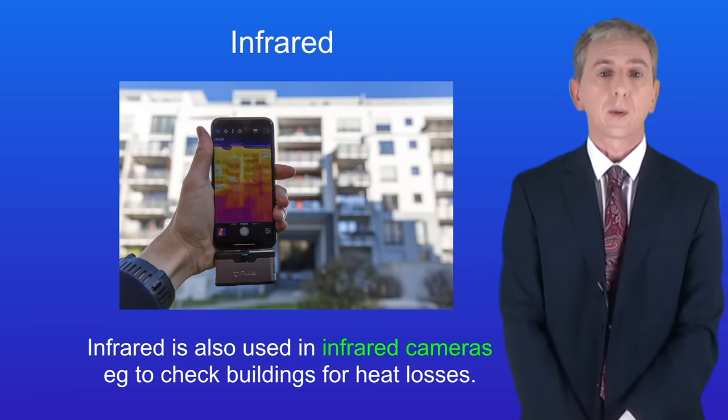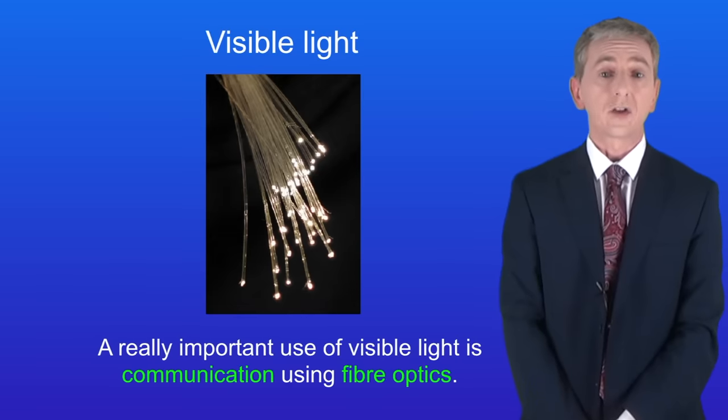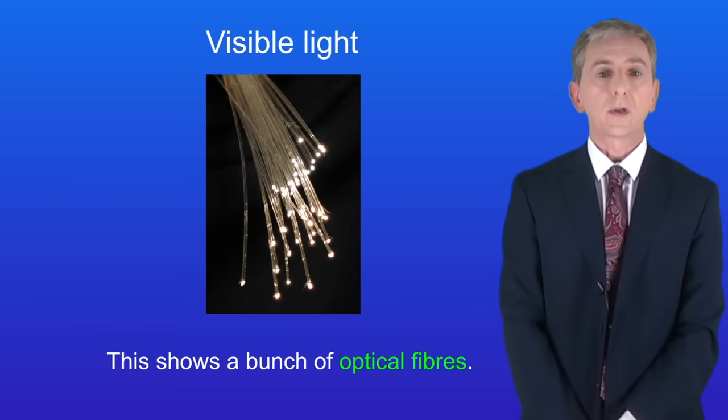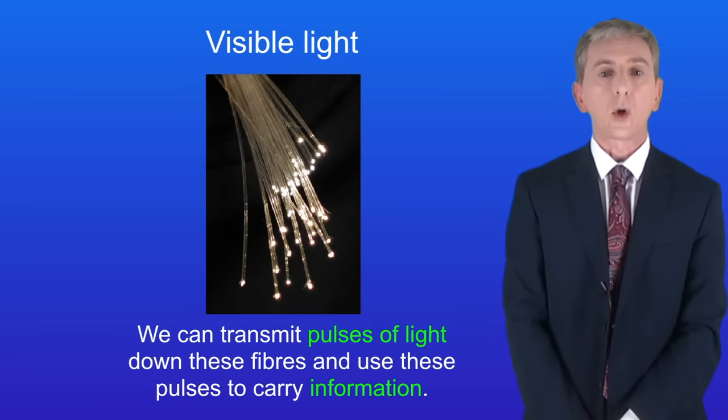Let's look now at visible light. A really important use of visible light is communication using fibre optics. I'm showing you here a bunch of optical fibres. Optical fibres are very thin strands of glass. We can transmit pulses of light down these fibres and use these pulses to carry information.